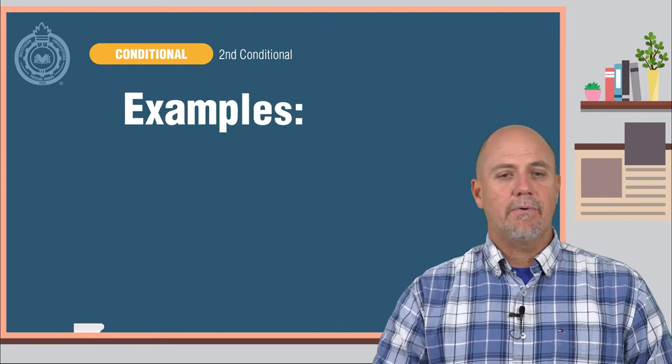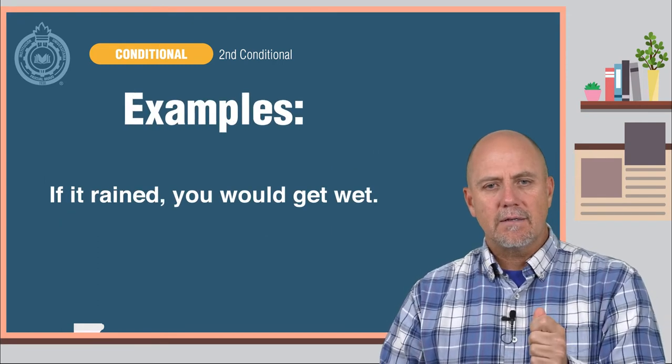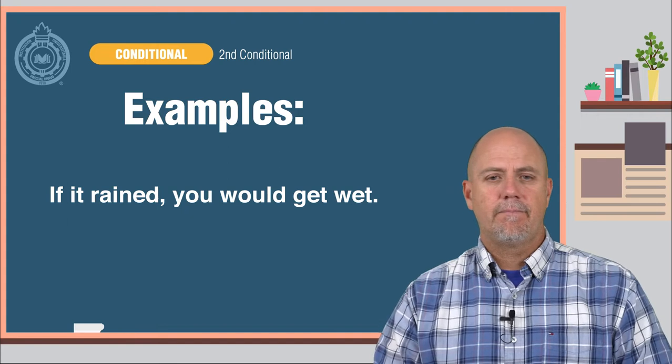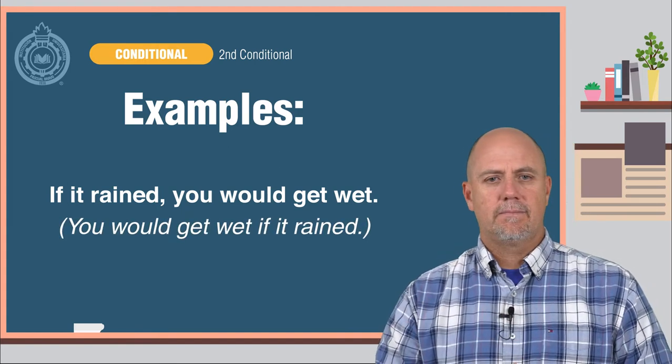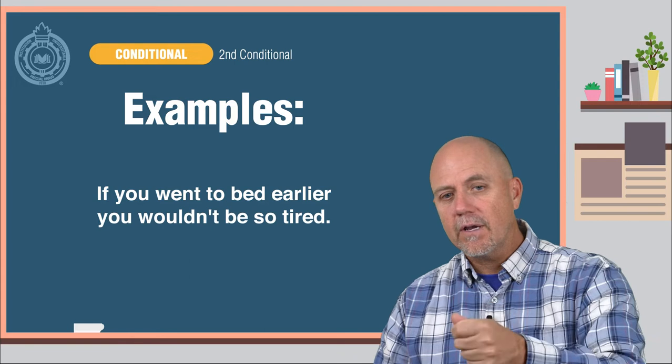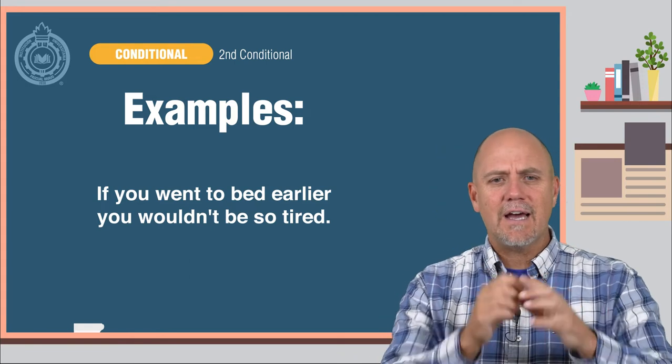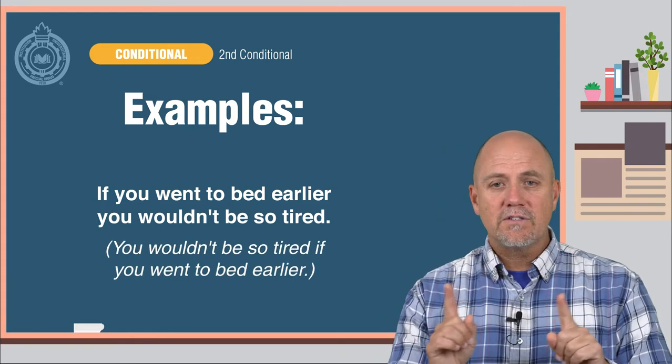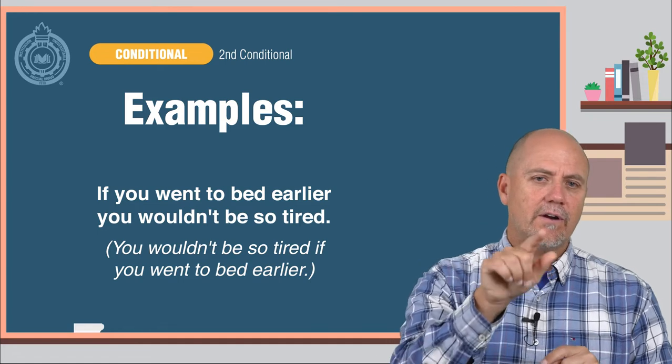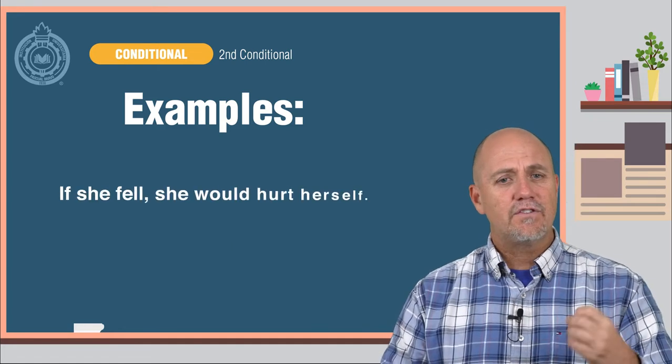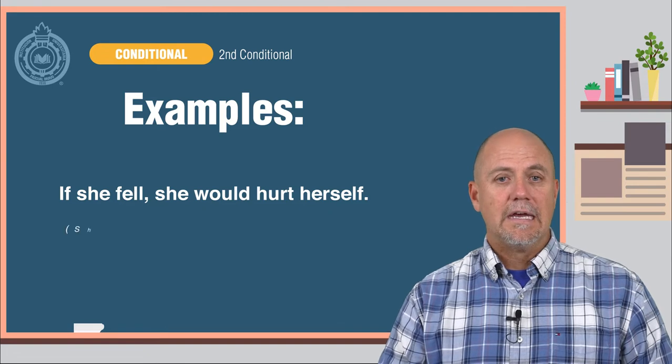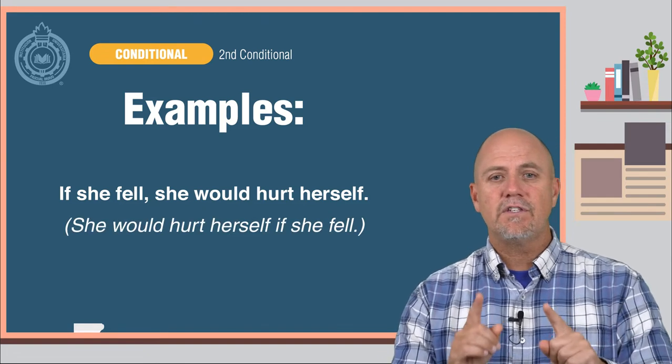Here are some examples. If it rained, you would get wet. You would get wet if it rained. If you went to bed earlier, you wouldn't be so tired. You wouldn't be so tired if you went to bed earlier. If she fell, she would hurt herself. She would hurt herself if she fell.